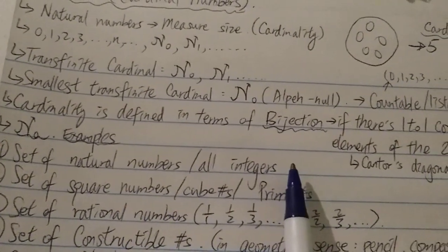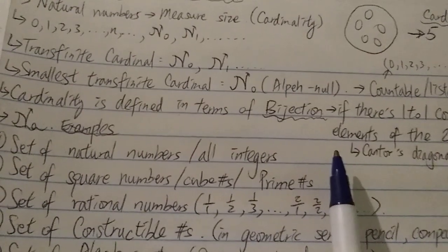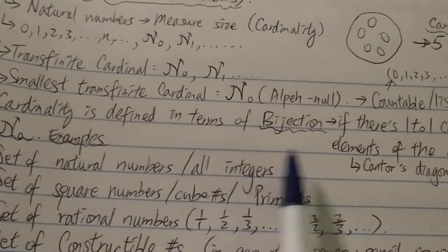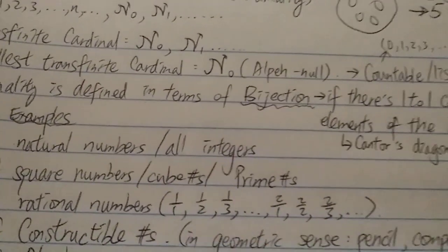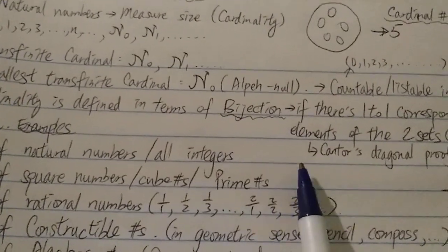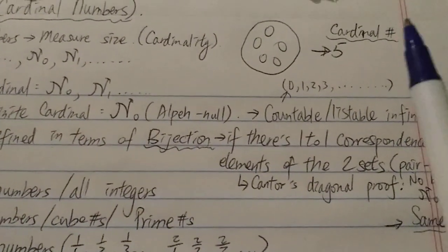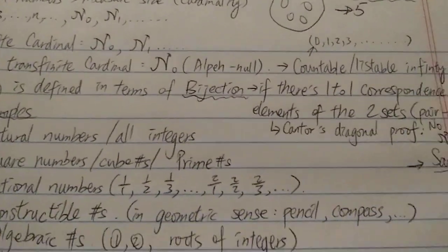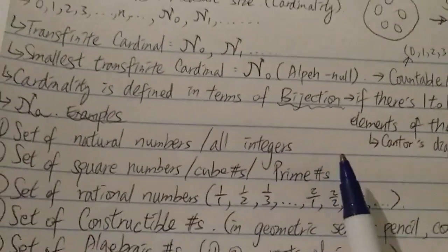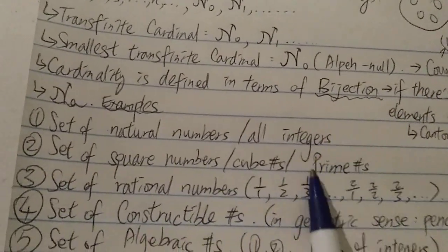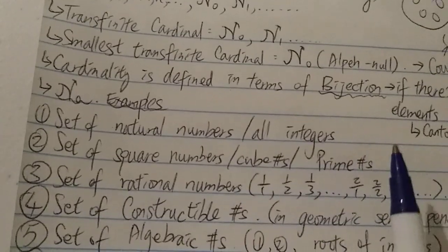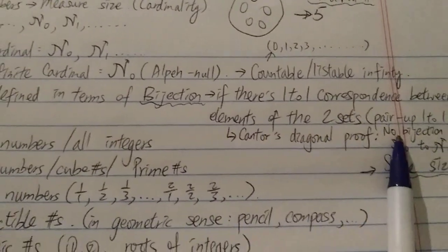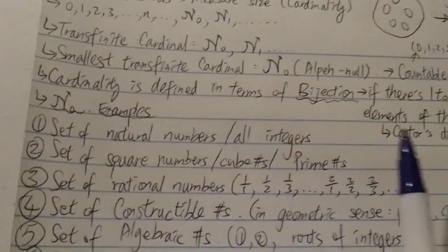Let's use the even numbers as an example. To most people it seems that the set of even numbers is smaller than the set of all integers — like it's half the size. But in fact it's not half the size, because you can pair them up one-to-one: 1 to 2, 2 to 4, 3 to 6, 4 to 8 — you can pair them forever. That's why they are the same size, even though it seems like the integers are twice as large. Since there's a bijection, they are the same size — both countable infinity.